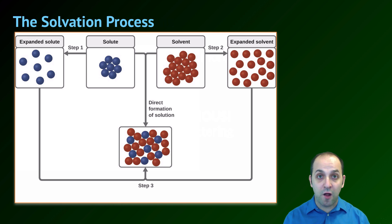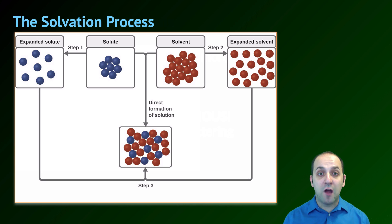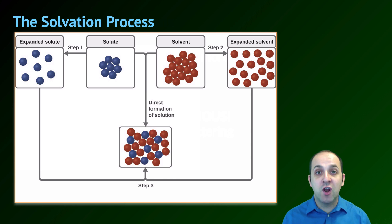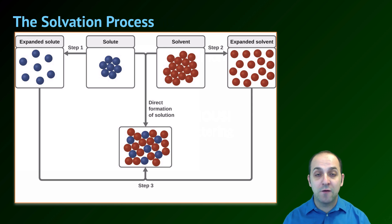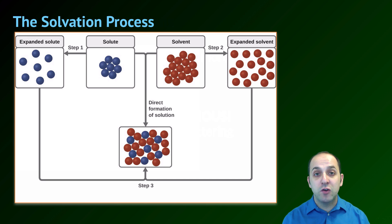The process of dissolving is known as solvation, and this diagram shows you how it works. There are really two major ways that solvation can happen. In the first, you would put some energy into the solute and the solvent in order to expand them, then mix the expanded versions together, which would cause them to form a solution — the production of metal alloys is a good example of this. The other way is to put the solute and solvent together and just wait, which in many cases will lead to the direct formation of a solution. A good example is putting sugar in water — you actually don't have to do anything after you put the sugar in the water for that solution to form, though you can make it happen faster if you stir it up.